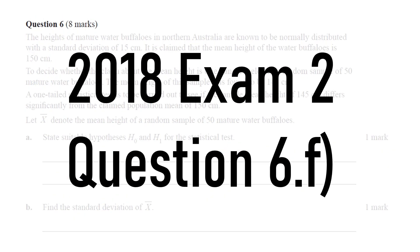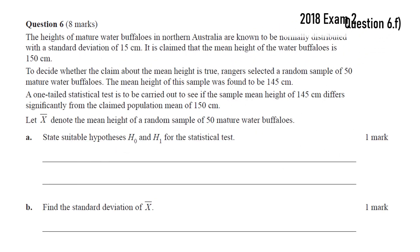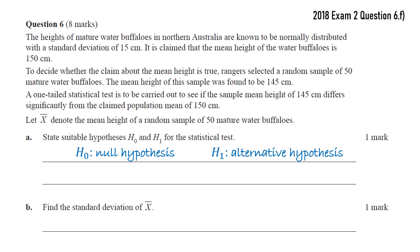Otherwise, last question, 2018 Exam 2, Question 6, Part F. So before we look at Part F, we probably should look at Parts A to E. It's a statistical test question about water buffaloes. We're told the heights are normally distributed with a standard deviation of 15, and it's claimed that the mean is 150. The first question is to find suitable hypotheses H0, well, that's the null hypothesis, and H1, that's the alternative hypothesis.